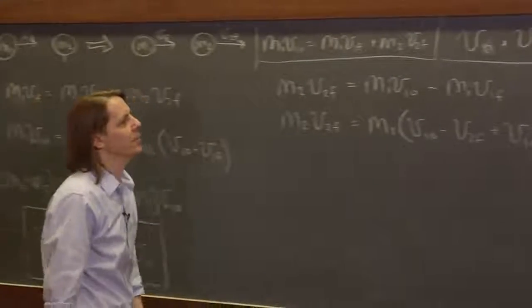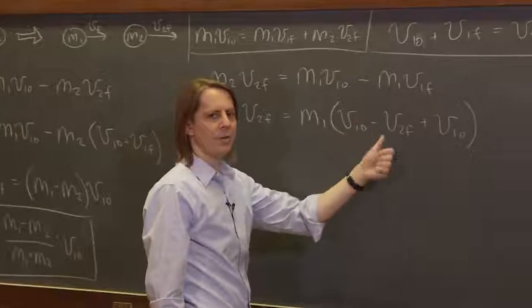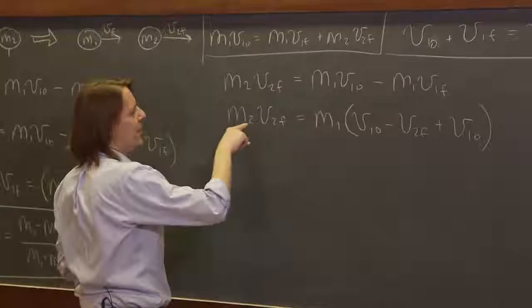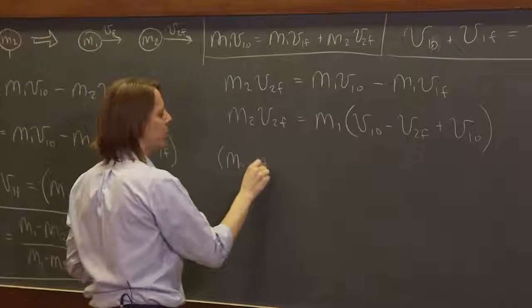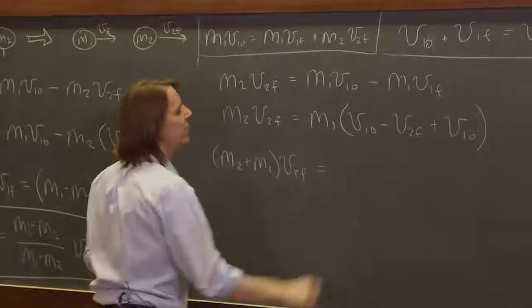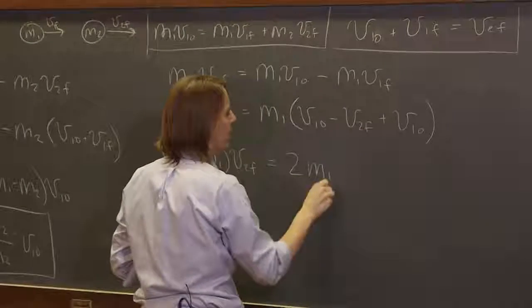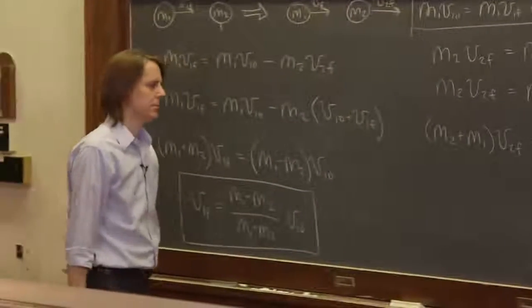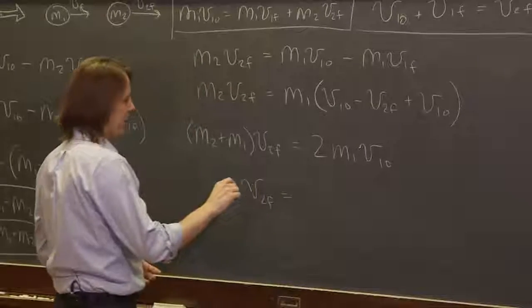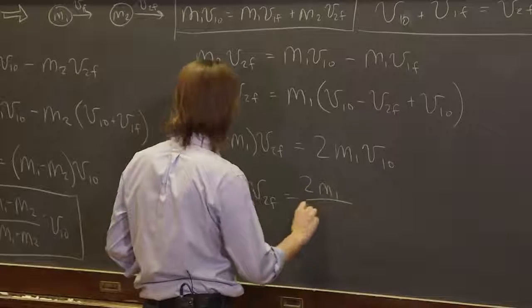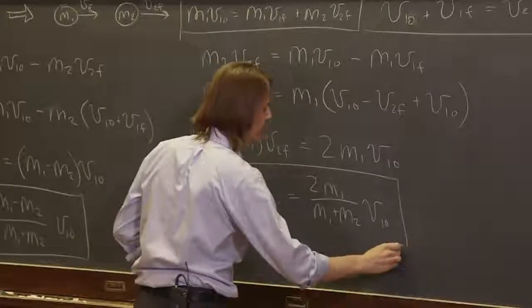After substitution, we have a v2f on the right that must move to the left, giving m2·v2f + m1·v2f = (m2 + m1)·v2f. On the other side we're left with two factors of v1_initial, so it's 2·m1·v1_initial. Solving for v2f gives: v2f = 2m1/(m1 + m2) · v1_initial. This is also potentially worth memorizing.